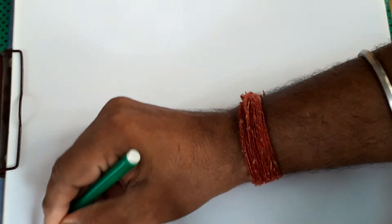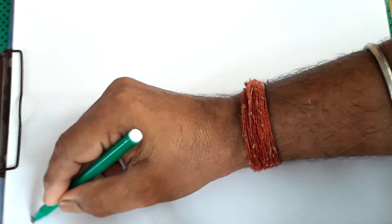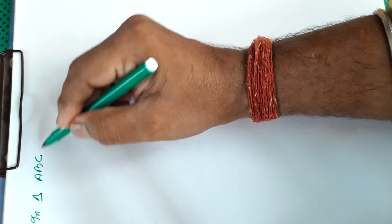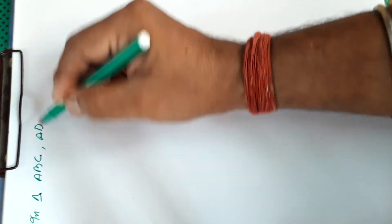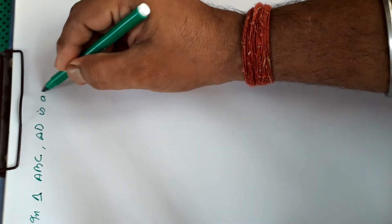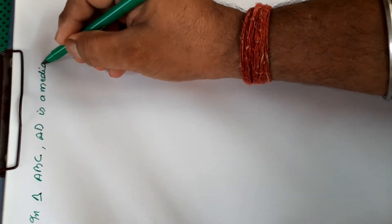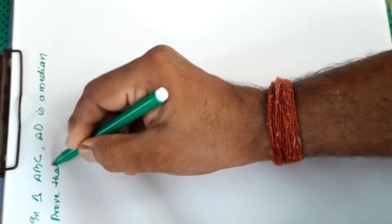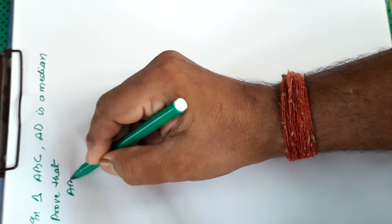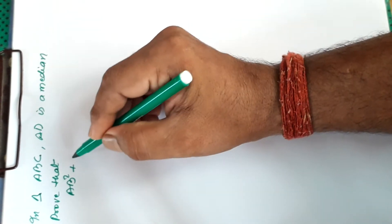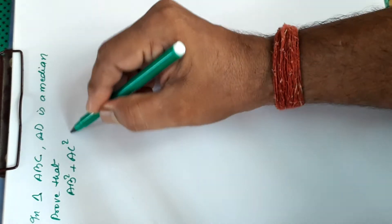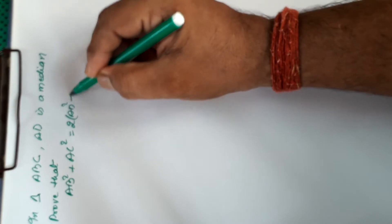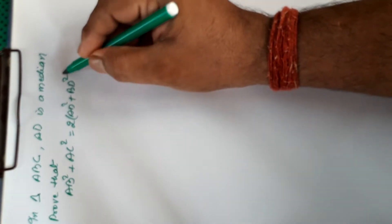The question is: in triangle ABC, AD is a median. Prove that AB square plus AC square is equal to 2 AD square plus BD square.